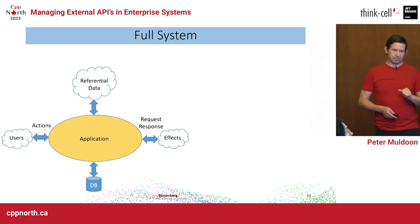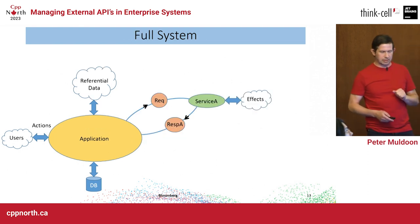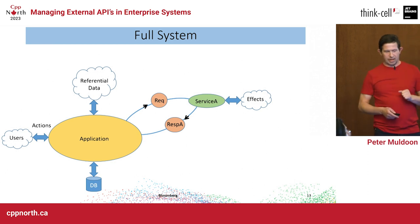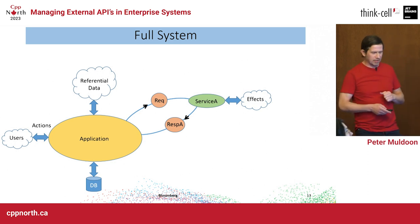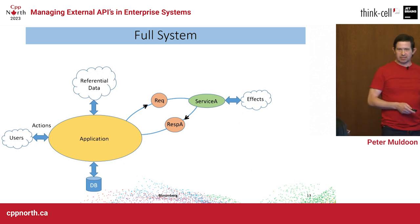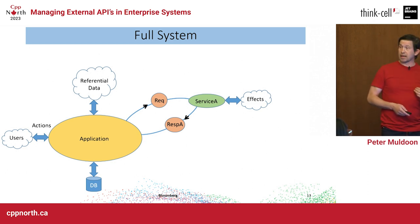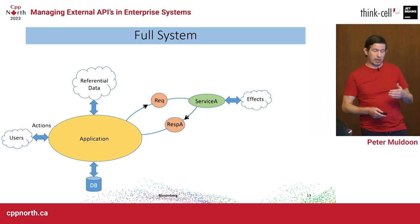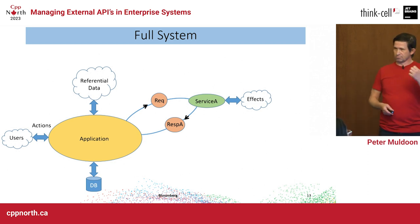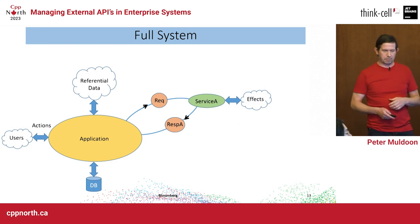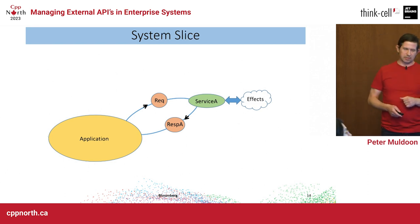Taking just a slice of the full system: I have a request going out to a server — I can't use the real names, Bloomberg won't let me, but we send a request to a server. We get a response back saying how well that did. Depending on the result, the state change will stick, or we send back to the user whether their action was successful or not.